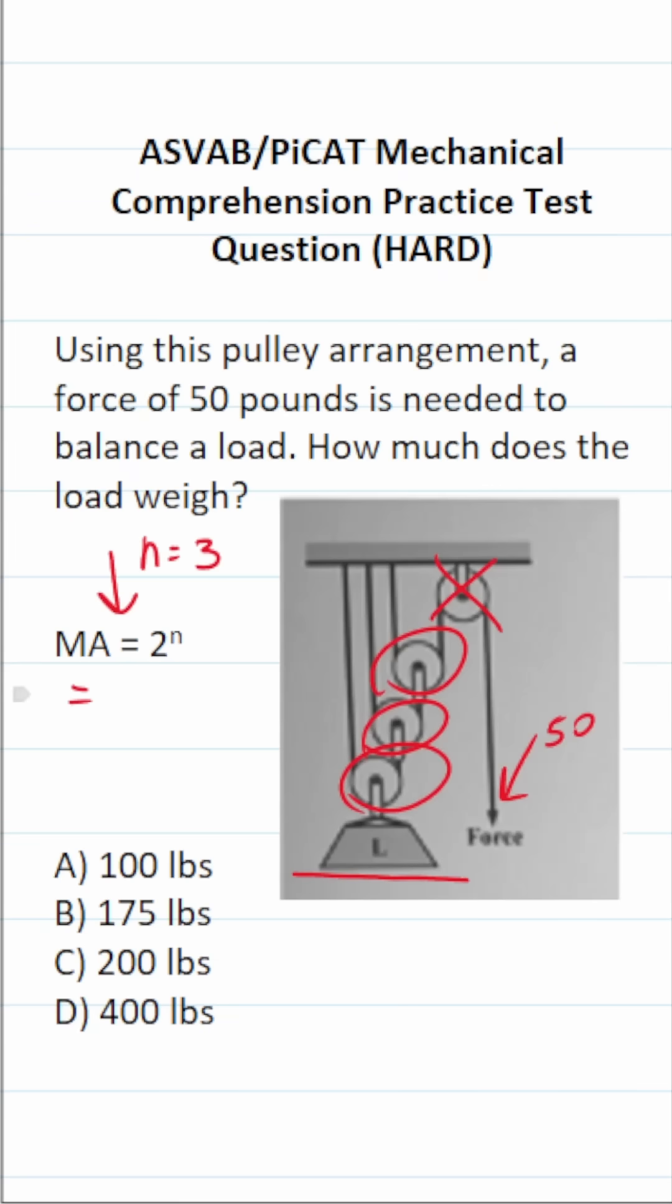This becomes 2 to the third power. That's the same thing as 2 times 2 times 2, which is going to be 8. In other words, this compound pulley system gives us a mechanical advantage of 8.